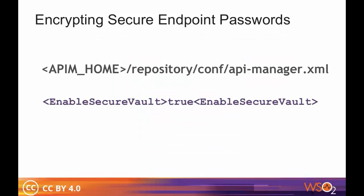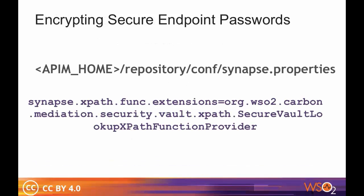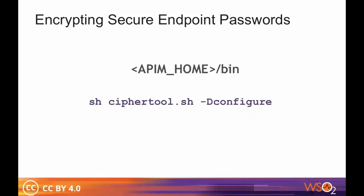A password that is given in plain text in the UI can be encrypted by setting the enable secure vault element to true in the API-home-repository-conf-api-manager.xml file, defining the Synapse property in the Synapse properties file, and then running the Cypher tool.